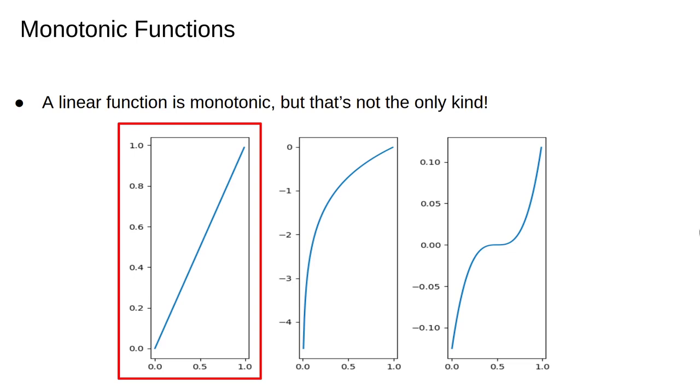A linear function is an example of a monotonic function, but other functions are monotonic too. We studied linear correlation in the previous video, which determines if there is a linear relationship between data. How can we quantify if there is a monotonic relationship between two data sets?